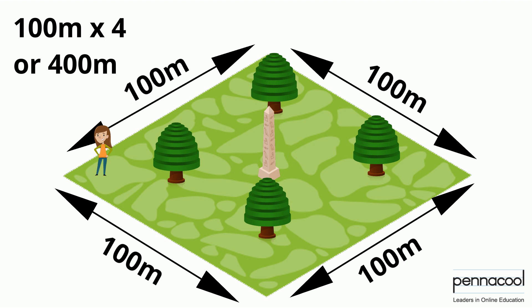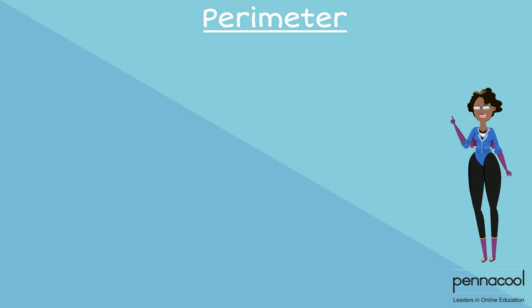The distance around a closed plane shape is known as its perimeter. We can find the perimeter of shapes by adding the lengths of all the sides together.